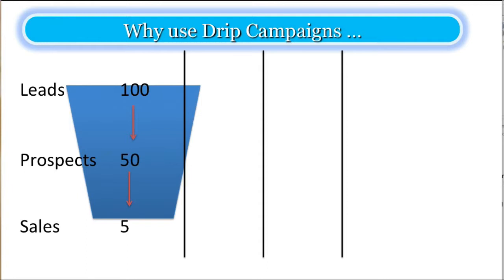What we're looking at here is really important because out of those 50 prospects, those are the ones we're interested in. Only 5 are actually buying. So what's happening to those 45? Why are they not buying? The answer is quite simple — they're not ready to buy at the first time that they get in touch with you. They're interested, but they're not ready to buy right now.